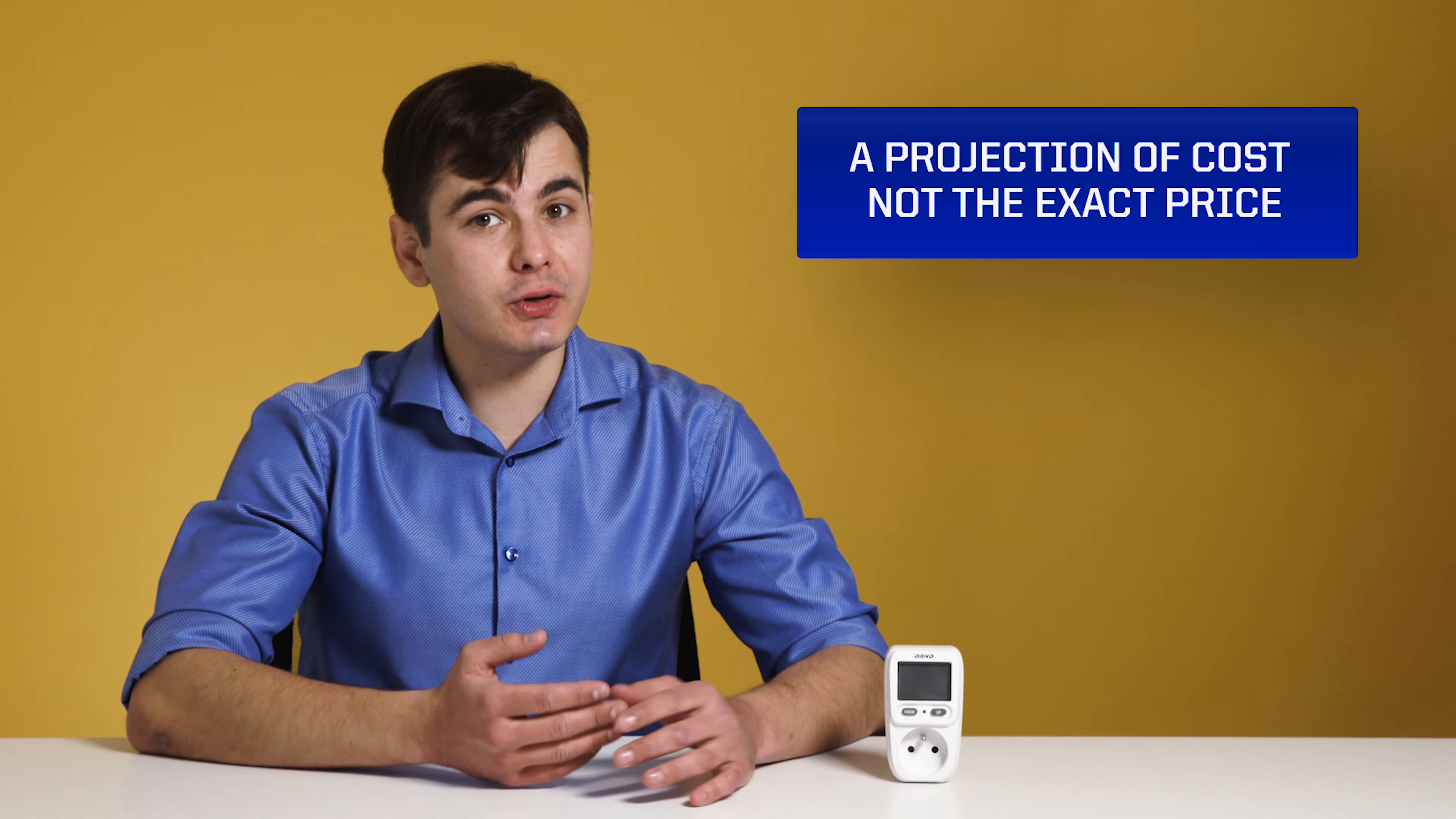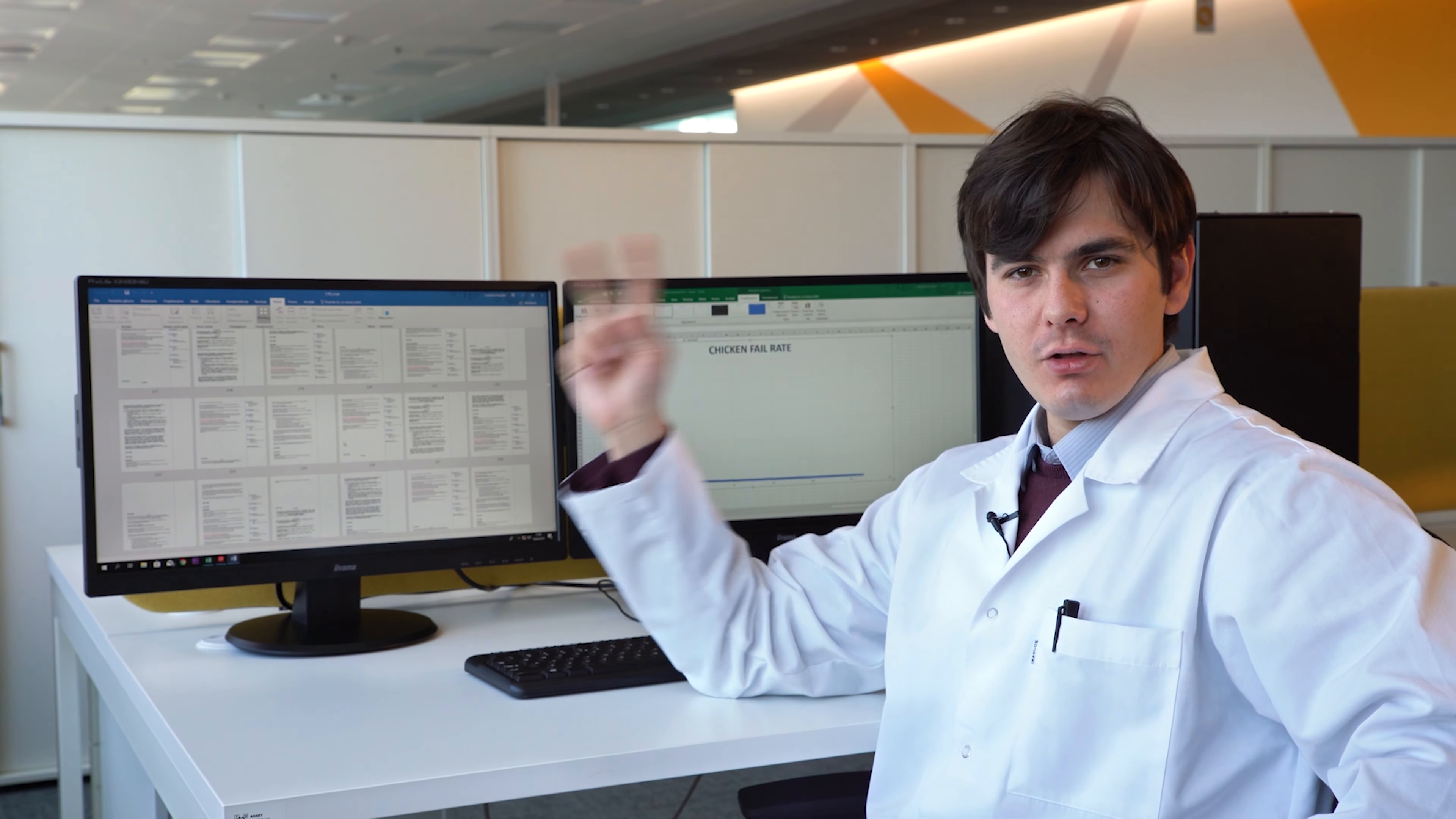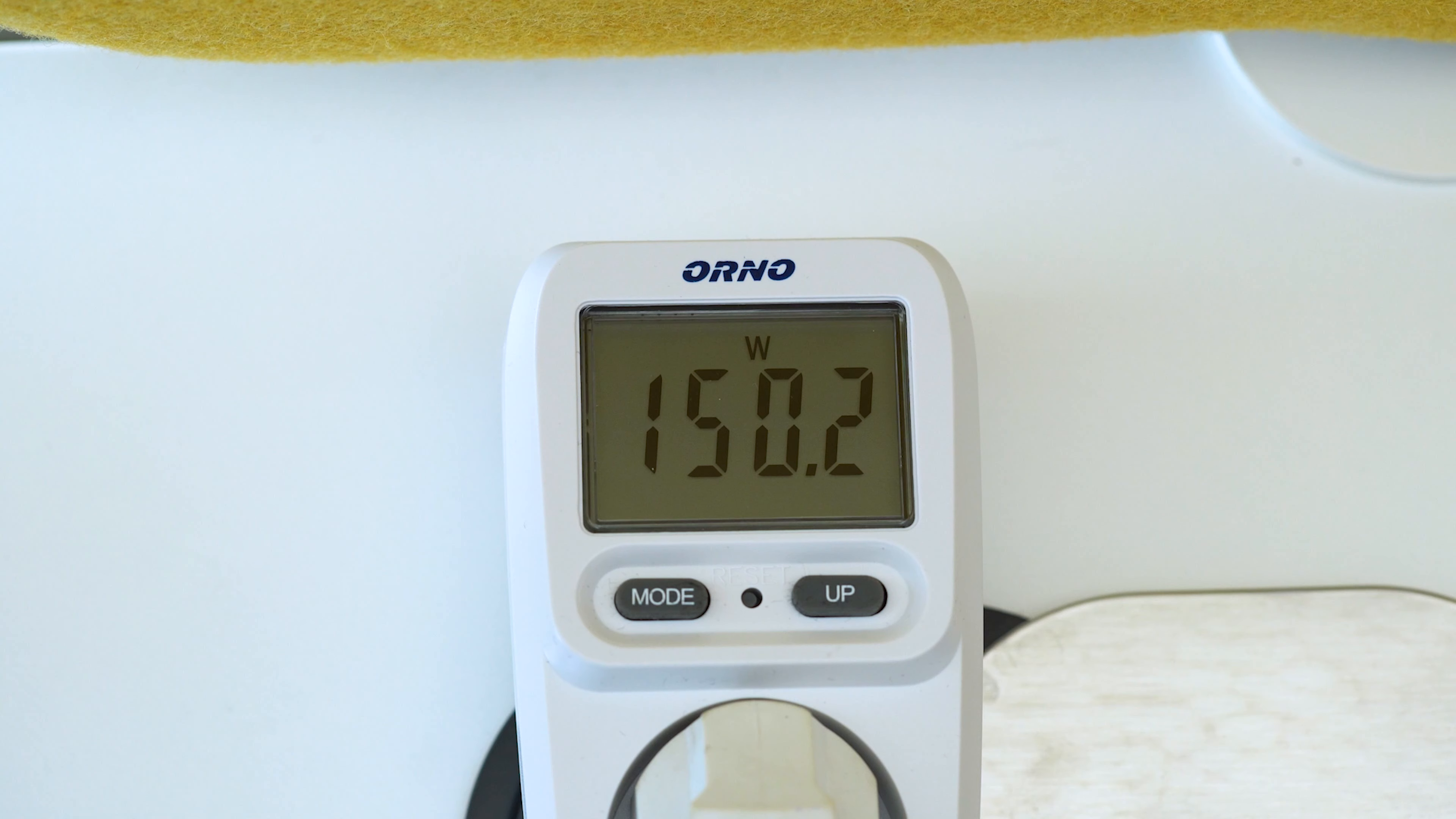A wattmeter is a device that measures the power consumption of an electric appliance connected to it. Most wattmeters can also give you a projection of costs. You can use it to check if the appliance consumes the amount of power stated on the device, or to check power consumed by several devices. As an example, let's take this PC and these two monitors. Plug all of them to the same outlet and measure the power consumption. This way you can find out if your appliance works properly and efficiently as it's supposed to.